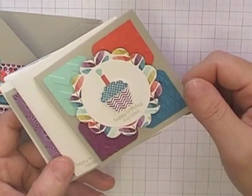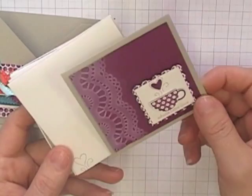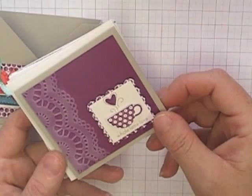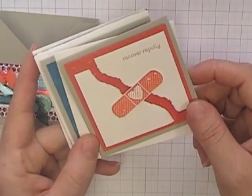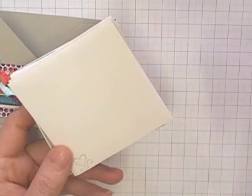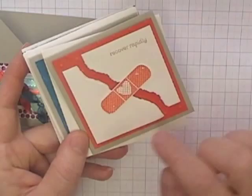There's a little happy birthday cupcake one and a matching envelope. I've done a little whole latte love with a coffee cup on it and some beautiful doily print down the side with embossing. My little recover rapidly one, I thought it was so funny when I did this—I did a bit of a tear and put the band-aid across it. My daughter thought it was quite goofy, but I liked it.